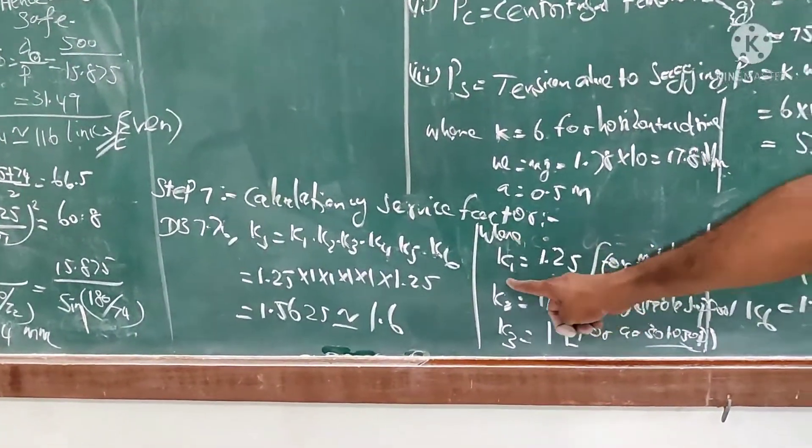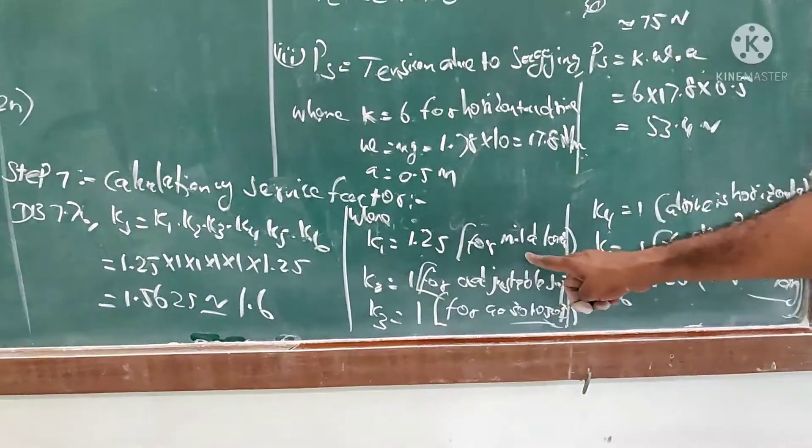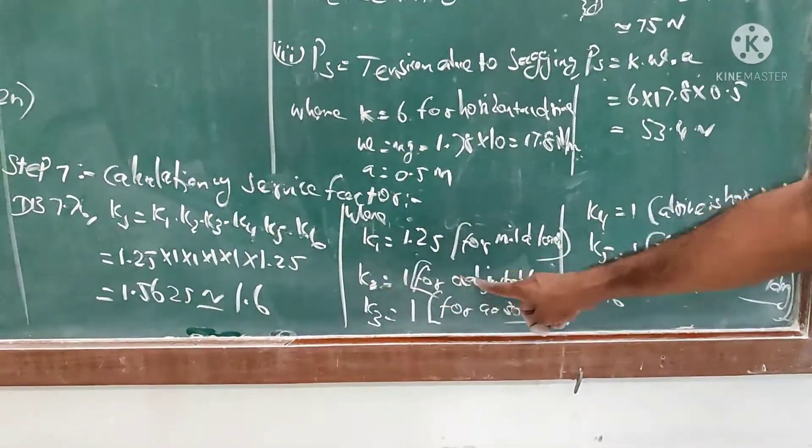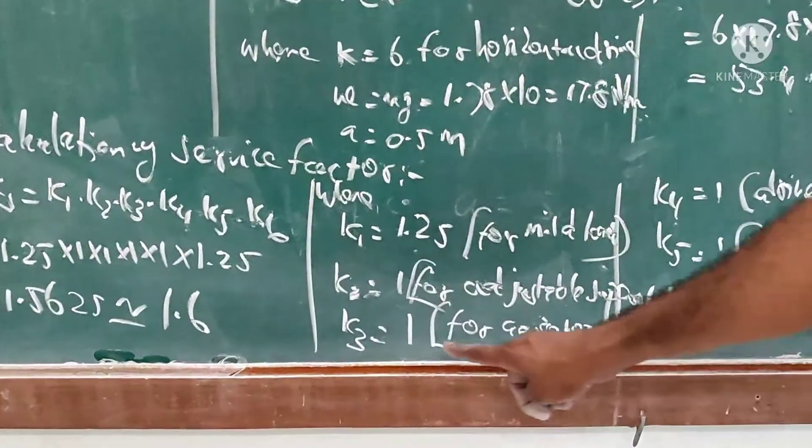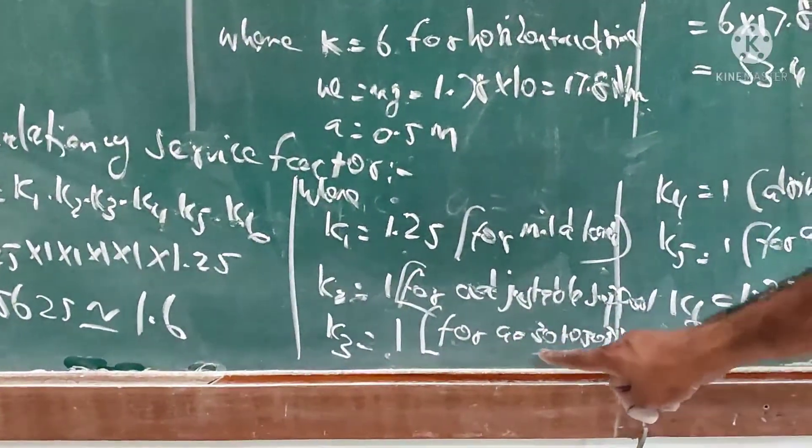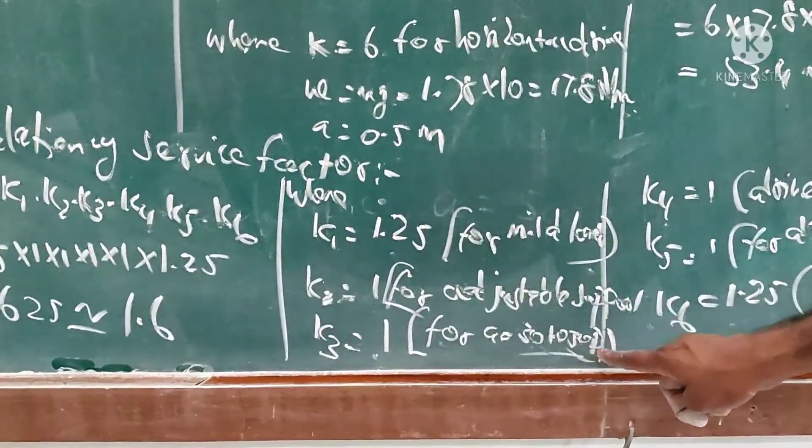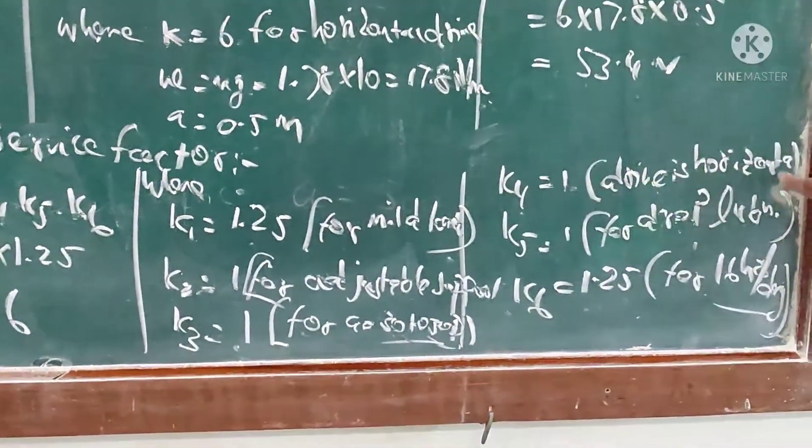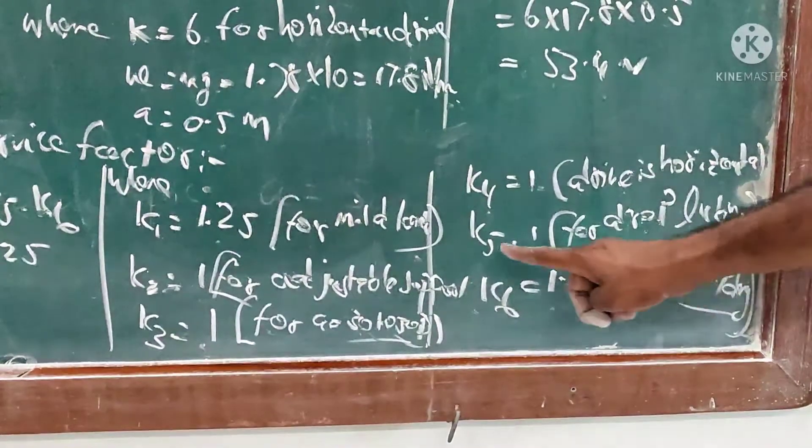Where K1 = 1.25 for mild shock load condition, K2 = 1 for adjustable support, K3 = 1 for A between 30 to 50 times pitch, K4 = 1 for drive is horizontal (we assume),